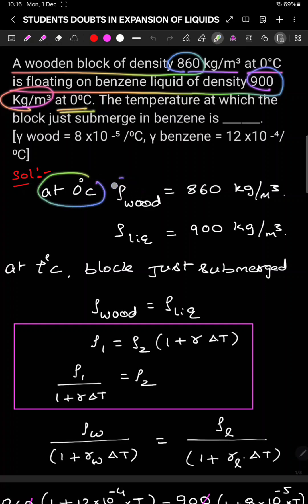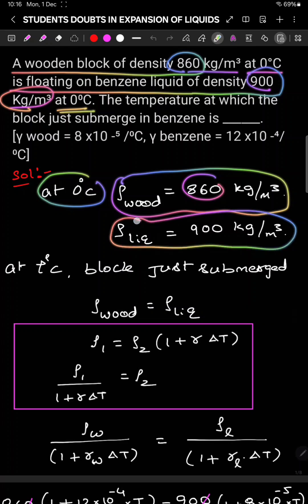That means at zero degrees, density of wood is given 860, density of liquid is given and it is floating like this. So there was the benzene, and in that a block was floating like this.